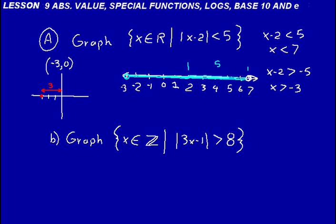Let's go ahead and look at this problem. It says graph x is a member of the set of integers such that the absolute value of 3x minus 1 is greater than 8. Let's solve this algebraically. Without the absolute value sign, you'd have 3x minus 1 greater than 8. Add 1 to both sides: 3x greater than 9, so x is greater than 3. We know part of our number line will be x values greater than 3.